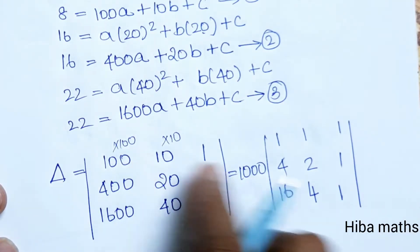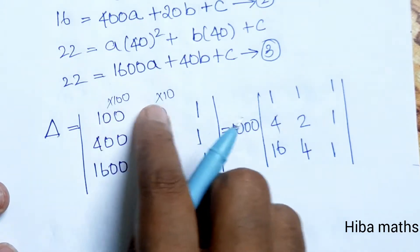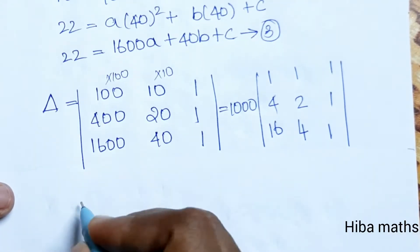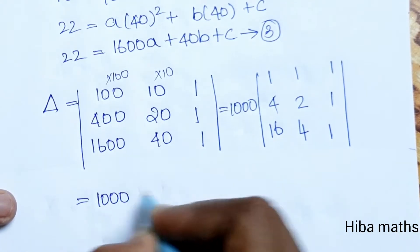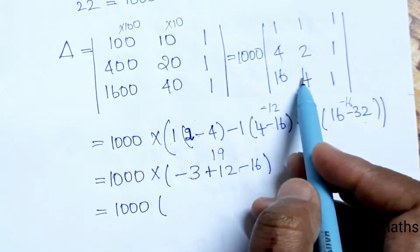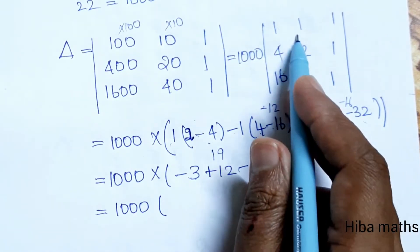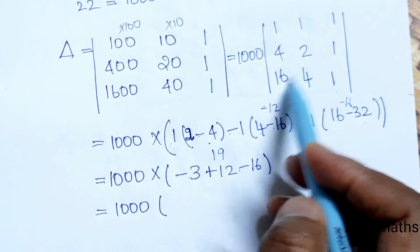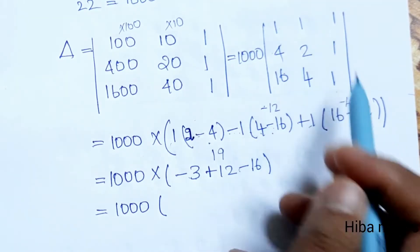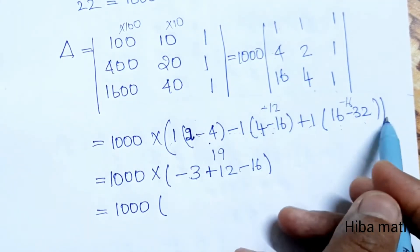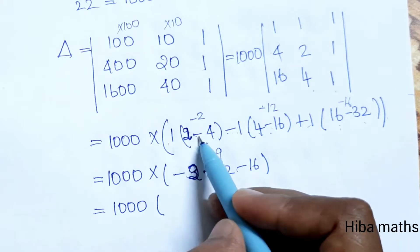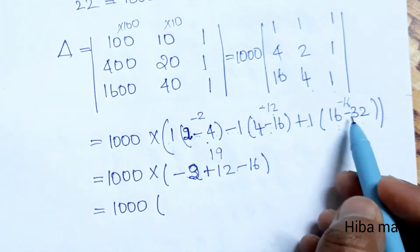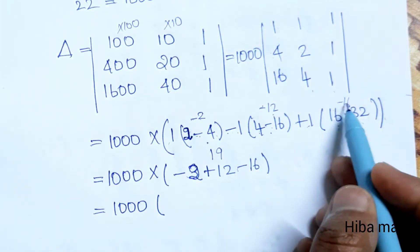We put the value 1000 out front. Expanding the determinant: 1000 into [2(1·1 − 1·4) − 1(4·1 − 1·16) + 1(4·4 − 2·16)], which gives 1000 into [(2−4·1) − 1(4−16) + 1(16−32)]. Computing: 2 minus 4 is minus 2, then minus 4 minus 16 is minus 12, then 16 minus 32 is minus 16.